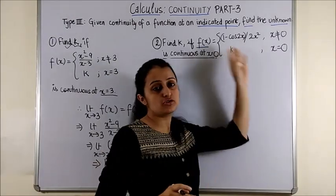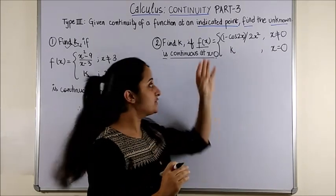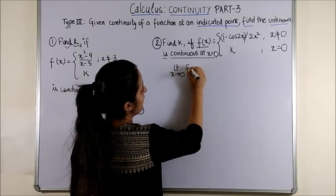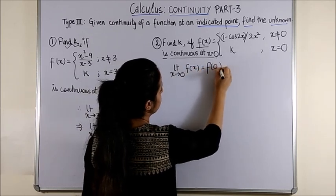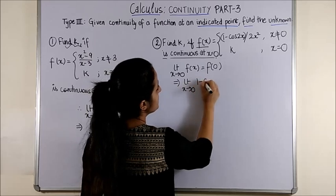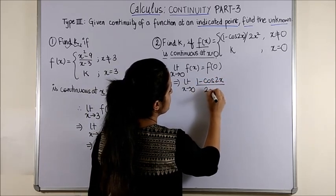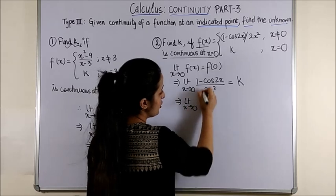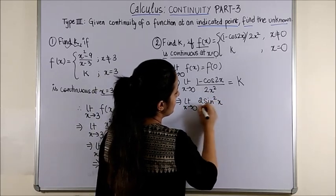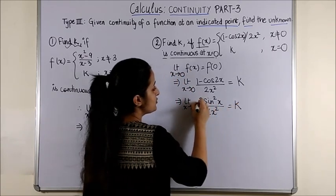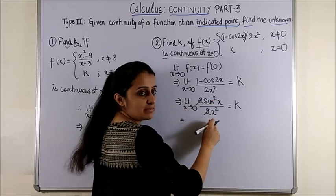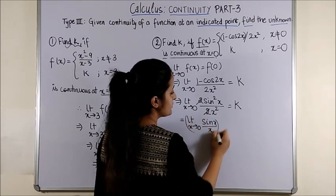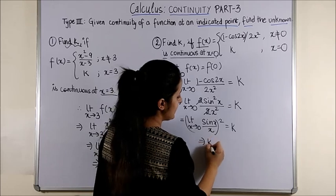So you are given the function is continuous at x equal to 0 and you have to find the unknown k. So once again you would say that limit x tending to 0 fx would be the same as f at 0. That means limit x tending to 0, 1 minus cos 2x upon 2x square is the same as k. On solving this you get 2 sin square x upon 2x square is equal to k. Now these 2's get cancelled and you know sin square x upon x square is the same as saying limit x tending to 0 sin x by x whole square is k which gives us k is 1.